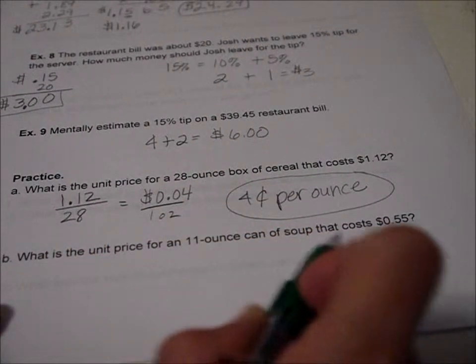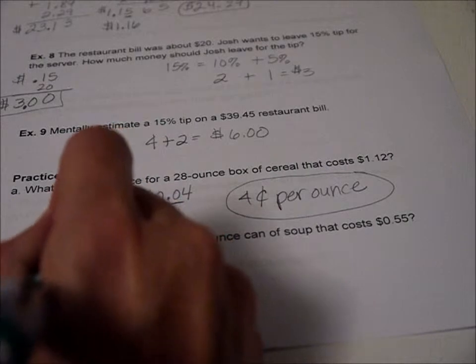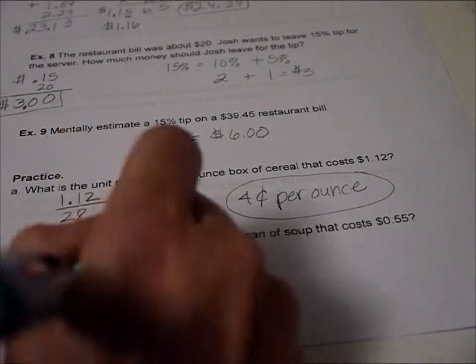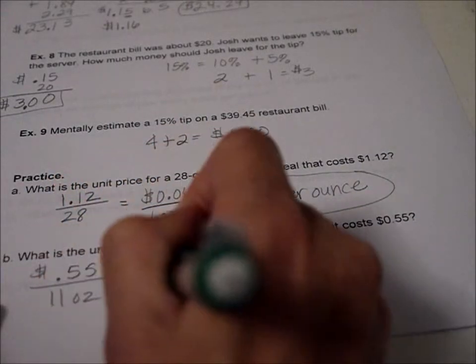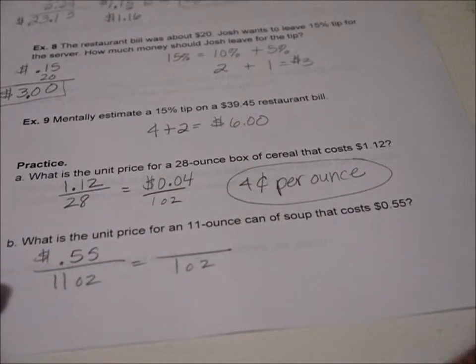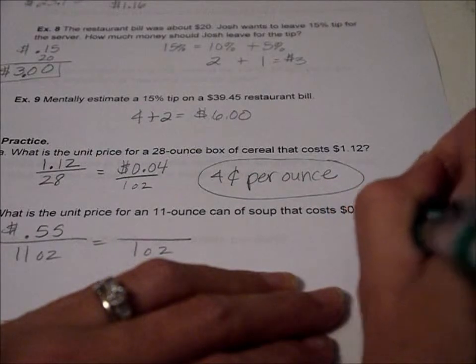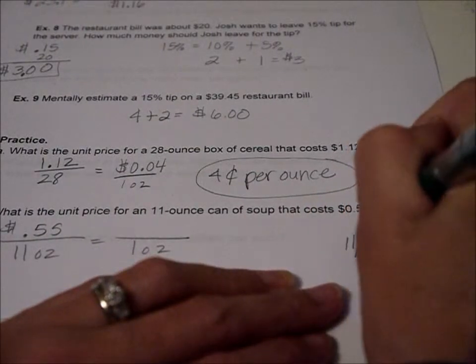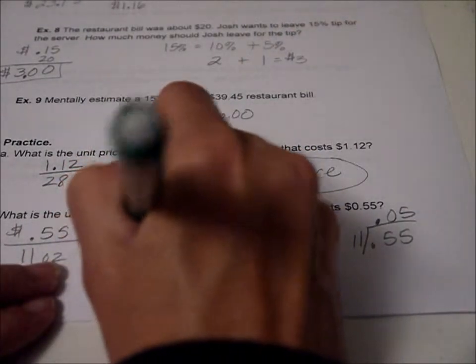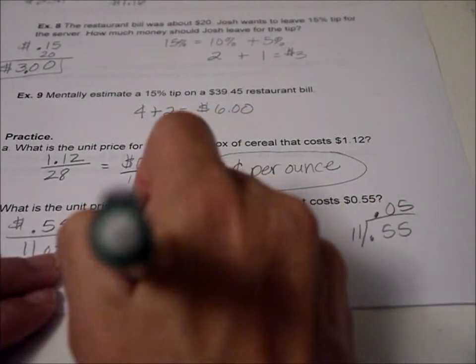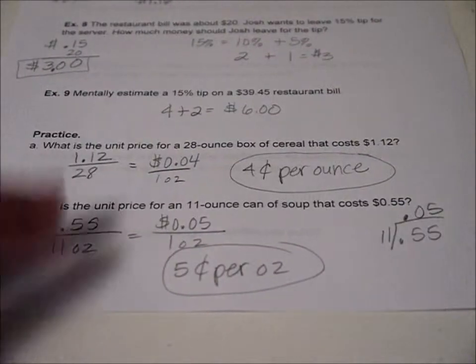What is the unit price for an 11 ounce can of soup? Again, I've not gotten soup before for 55 cents. So 55 cents, we want to know how much one ounce is. So we do 55 divided by 11, or .55. Now that was nice because it's a multiple of 11. So we just put that up there, and it's .05, so it's 5 cents basically per ounce. Again, it's not reality anymore. It would be nice.